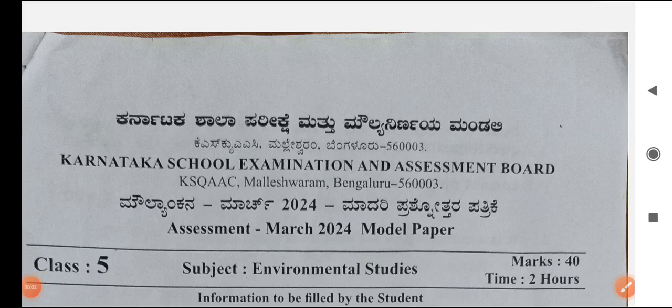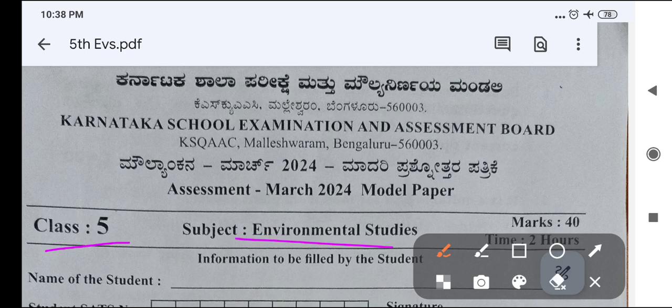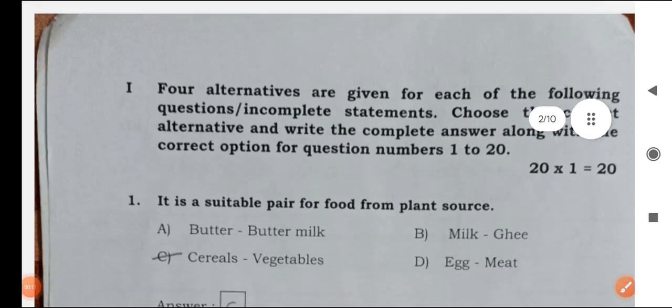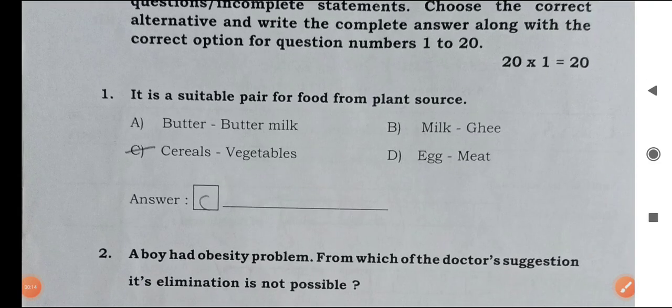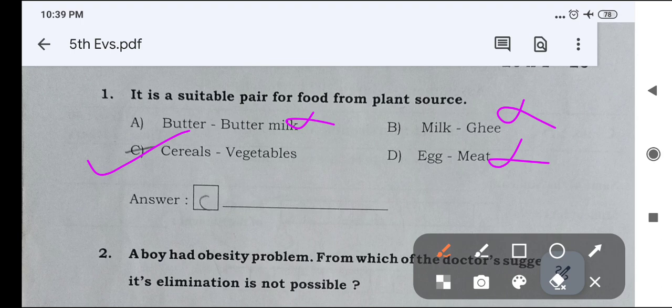Hello everyone, it is class 5th EVS 2024 model question paper. First question is, it is a suitable pair for food from plant source. Butter and buttermilk, wrong answer. Milk and ghee, wrong answer. Egg and meat, wrong answer. Right answer is cereals and vegetables. It is a suitable pair for food from plant source.